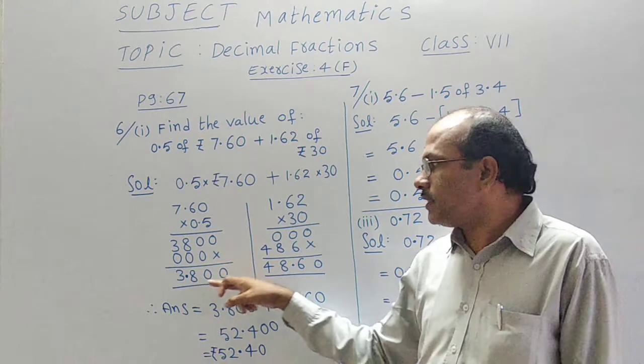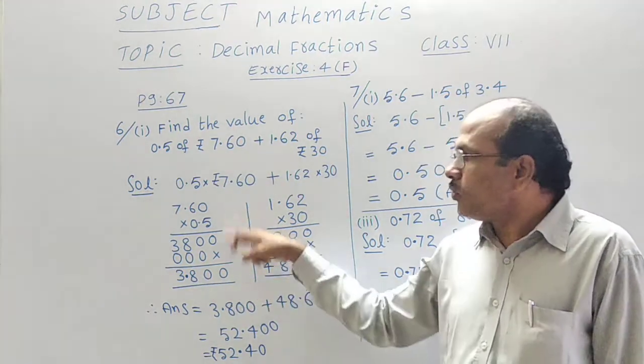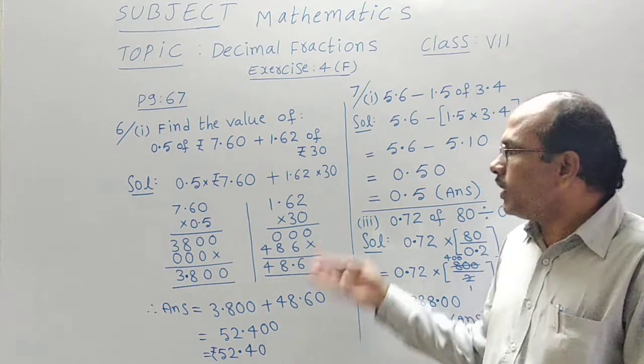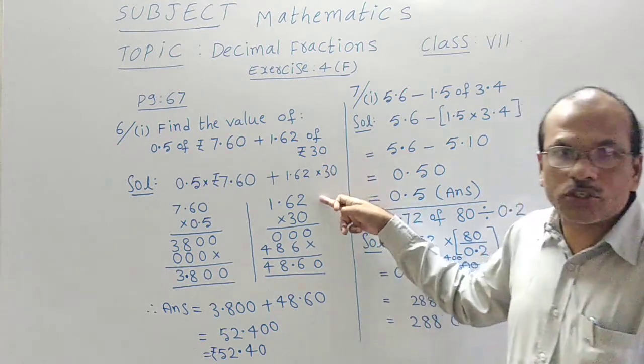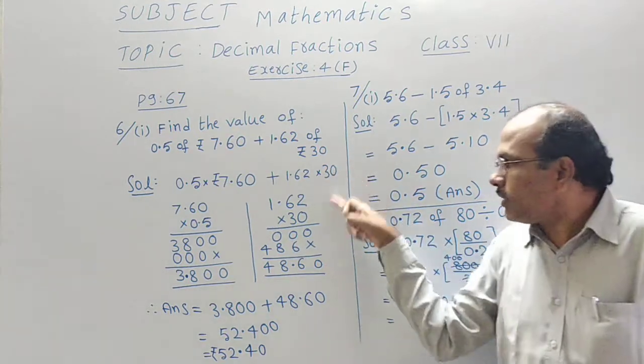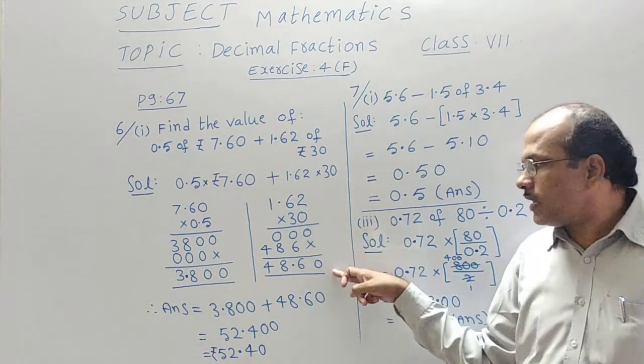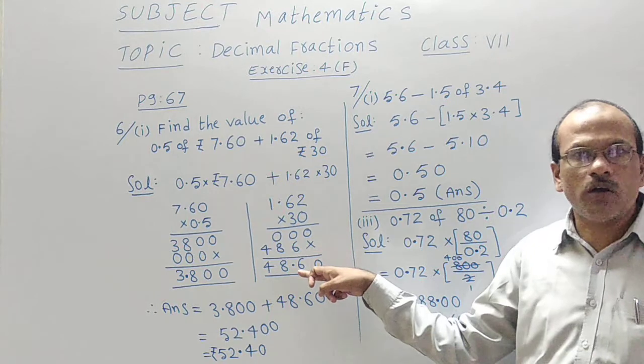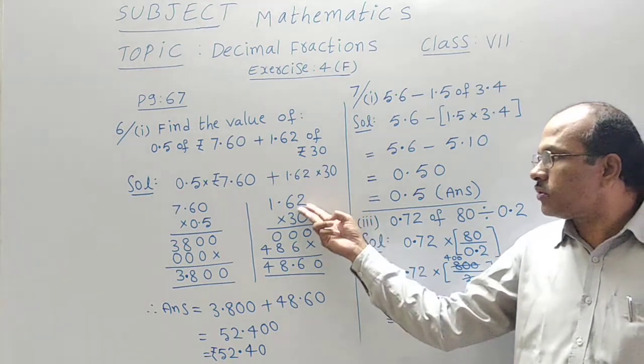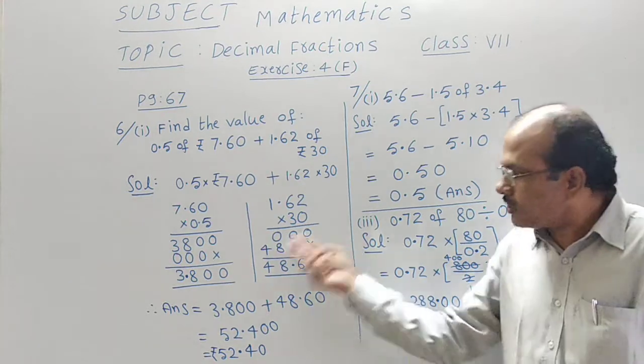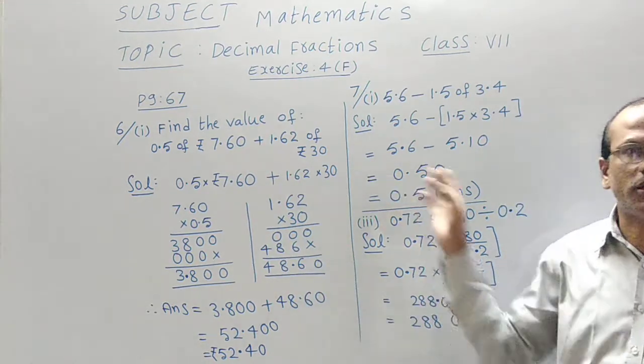So 3.800. You know how to multiply them like an ordinary multiplication. Then here 1.62 should multiply with 30. Then when we get the answer we should place a point here, that is after 2 digits. So point is after 2 digits, as we thought earlier.